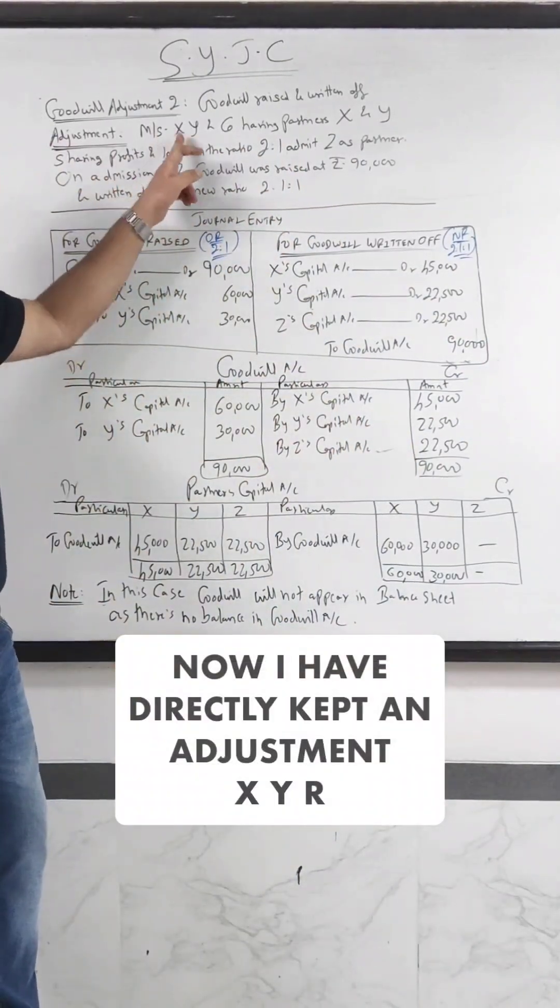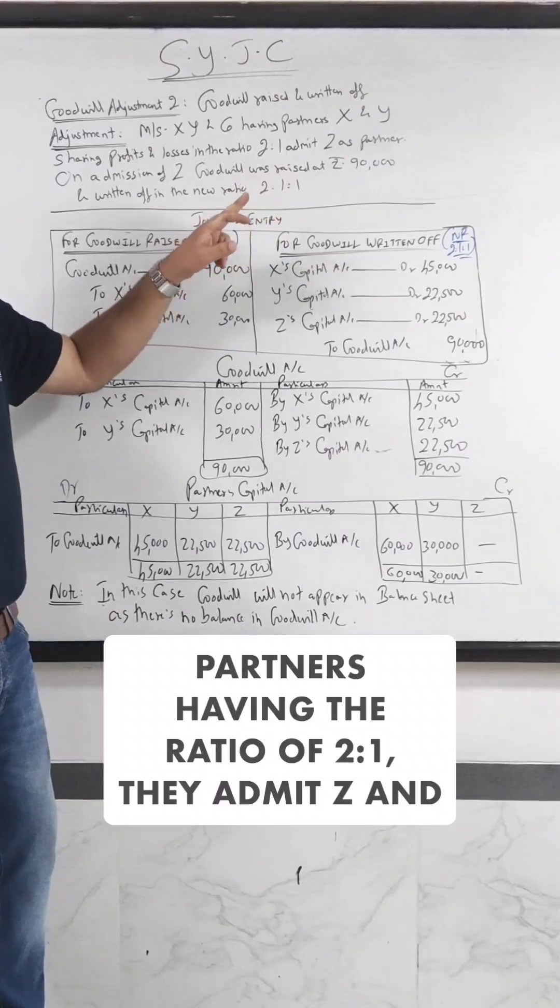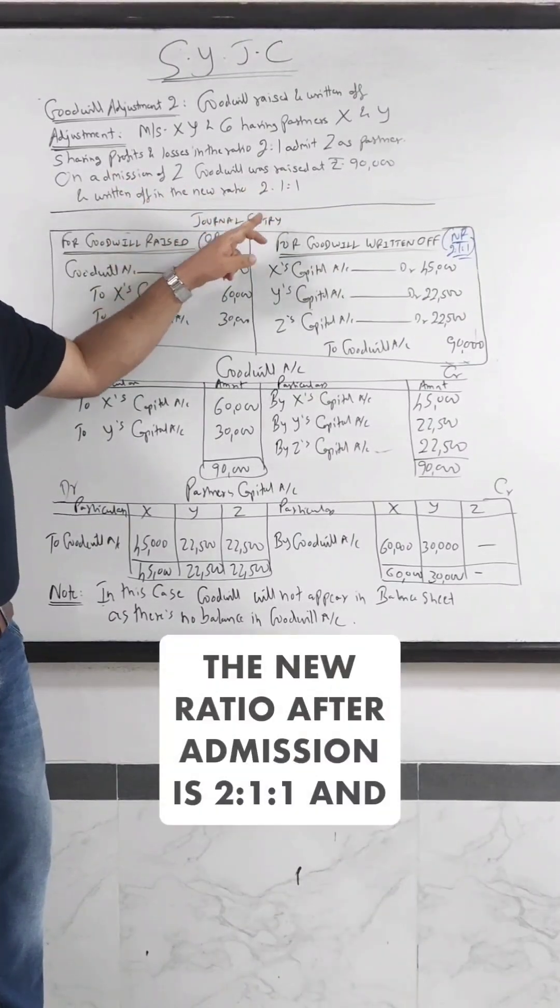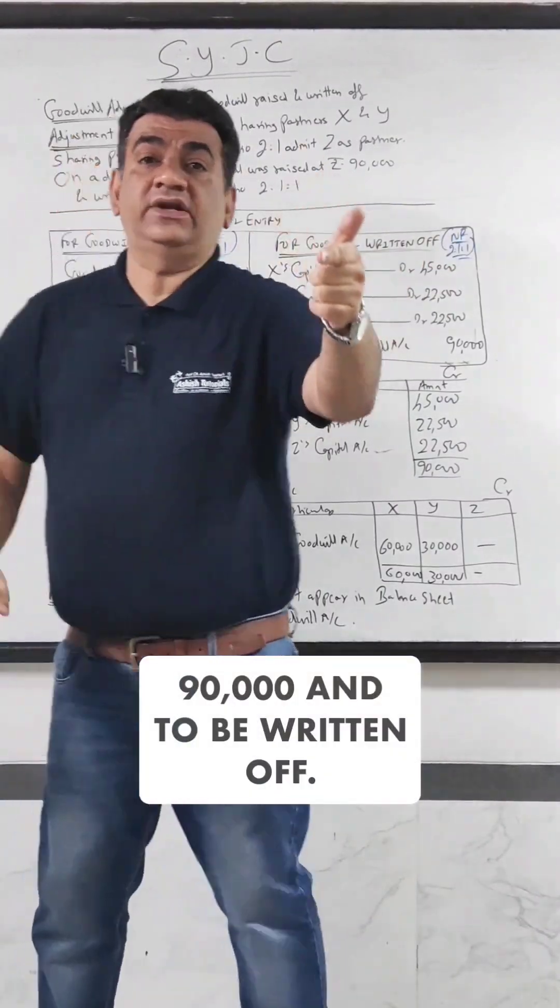Now I have directly kept an adjustment. XYR partners having ratio of 2 is to 1, they admit Z and the new ratio after admission is 2-1-1 and what the adjustment says, goodwill raised at 90,000 and to be written off.